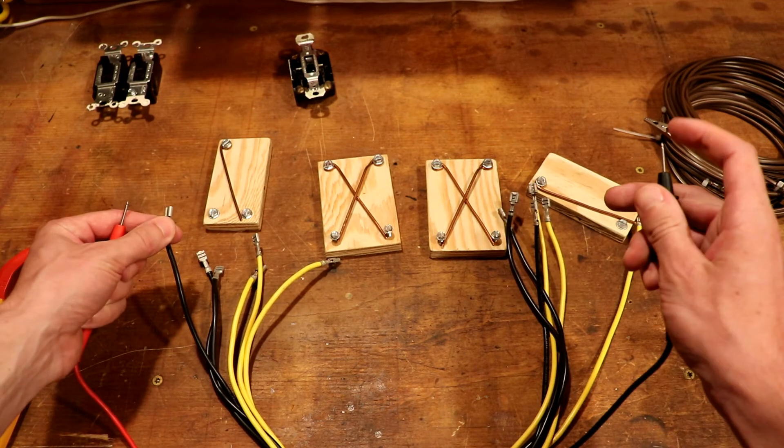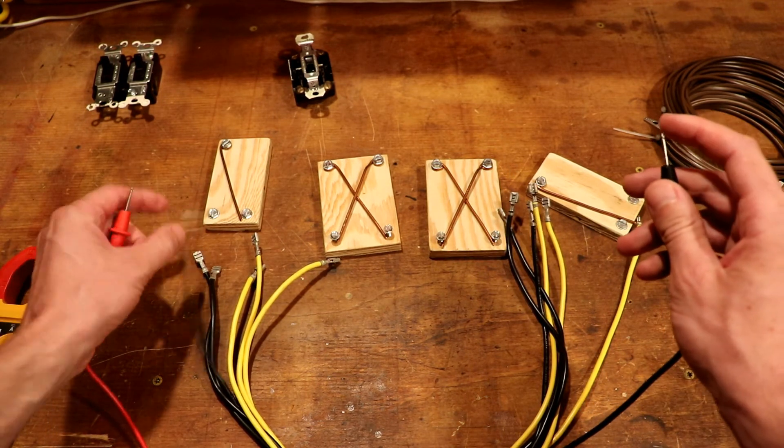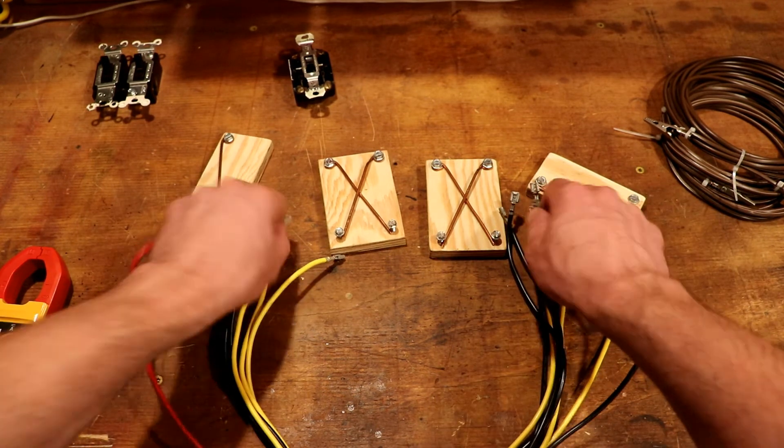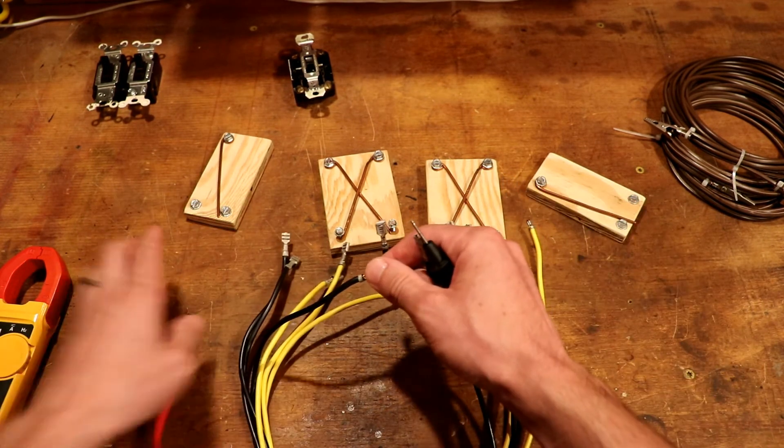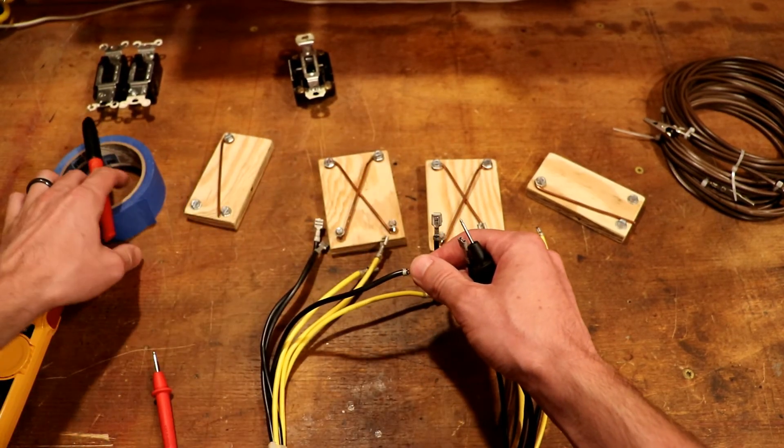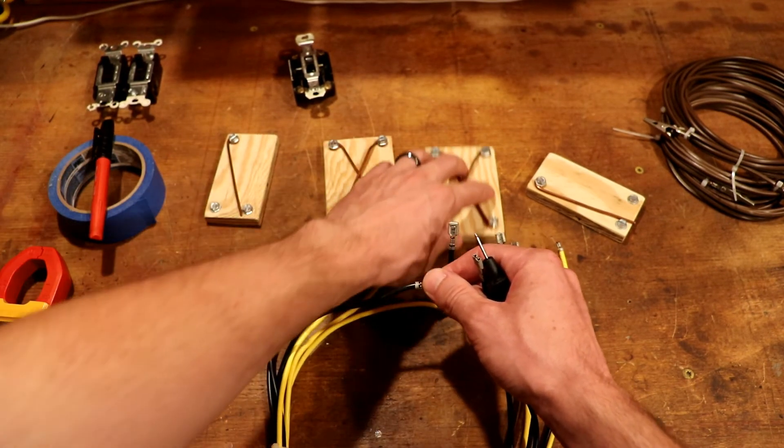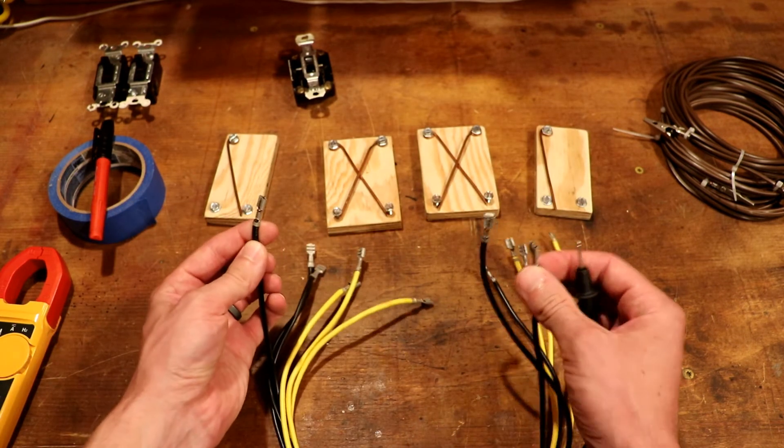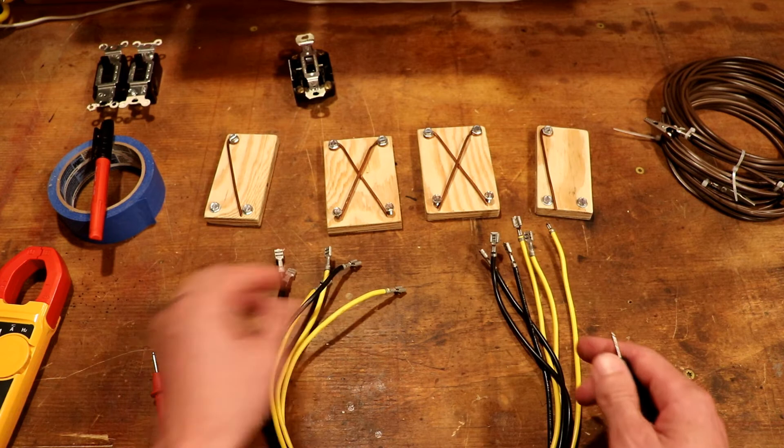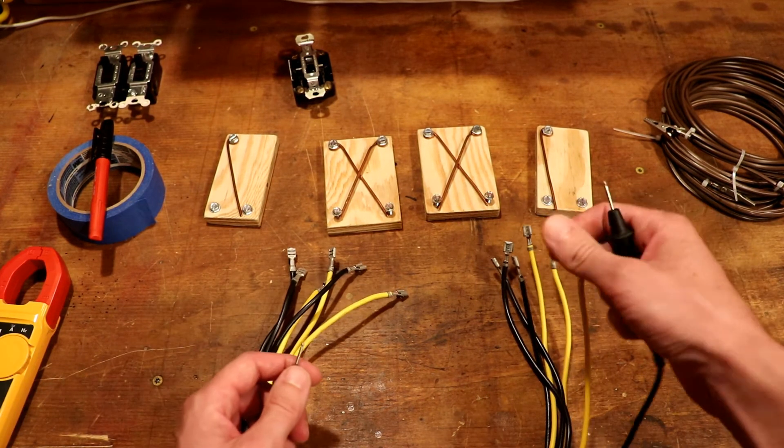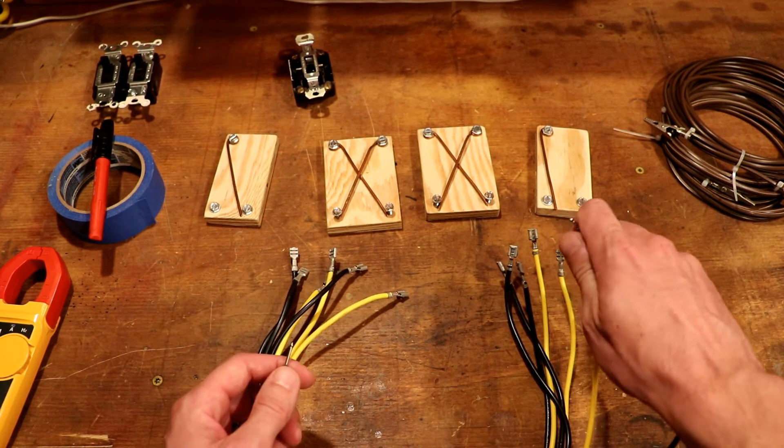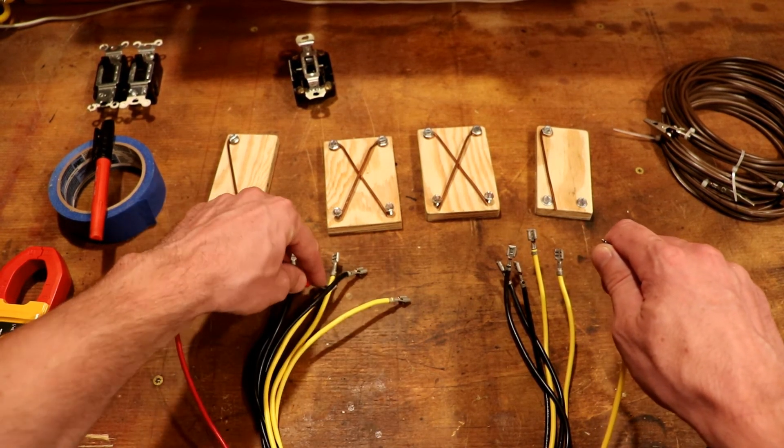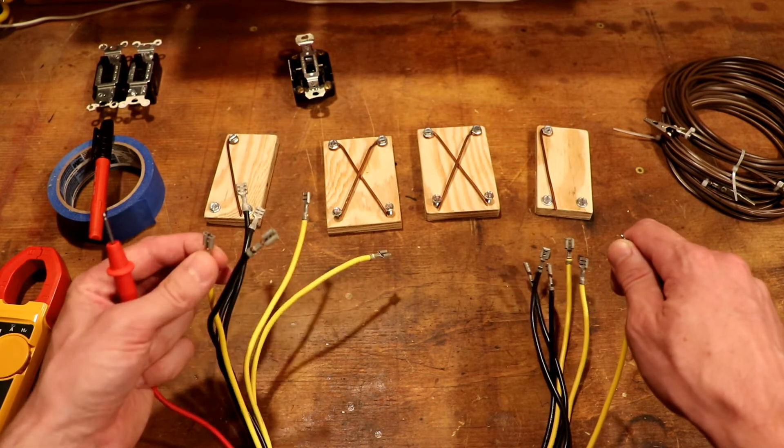There we go. So that tells me that electricity can flow between these two leads via this wire. So then I'm going to grab my masking tape and a Sharpie, which I also used to label that hot wire in the first box. And I'm going to label a one and a one.